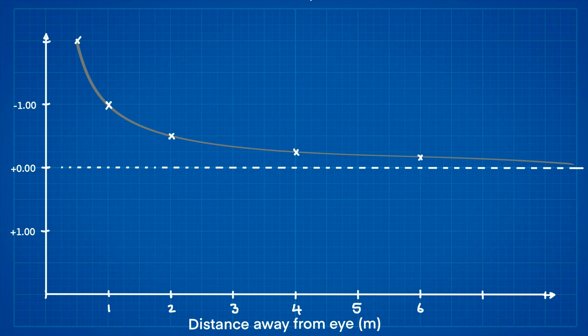Consider this graph. The x-axis tells us the distance in meters we are away from an object. A perfect eye is focused at 6 meters, and a short-sighted eye is focused at closer than 6 meters. If you were long-sighted and had a prescription of a plus 1, that would mean that you would need to put in 1 diopter of work for the distance vision to be clear.